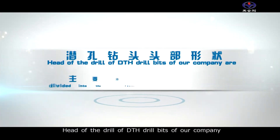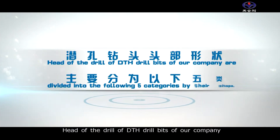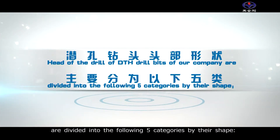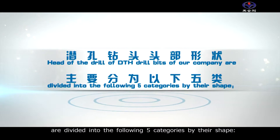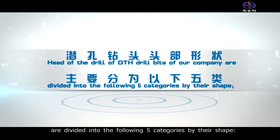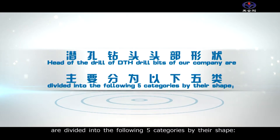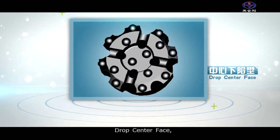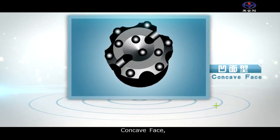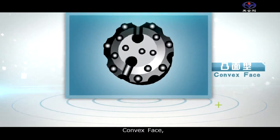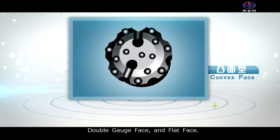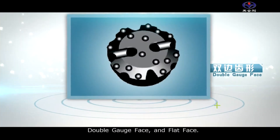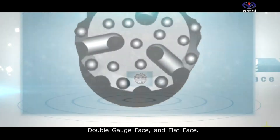The drill heads of DTH Drill Bits are divided into the following five categories by their shape: drop center face, concave face, convex face, double gauge face, and flat face.